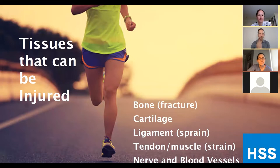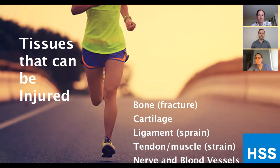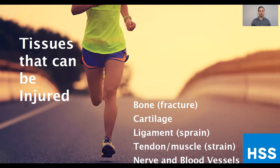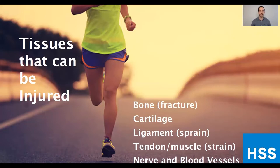I wanted to get started by giving you a brief overview. We're talking about foot and ankle injuries today — obviously a pretty big scope of things to cover in a short time, so we're going to give you a very brief overview. When we look at injuries of any part of the body, anatomy is a very important part of that. The first thing to understand are the different tissues that can be affected by injury. An injury to the bone can result in a fracture, and you can also get bone contusions or bruises.